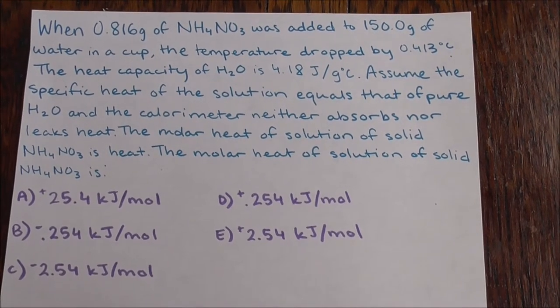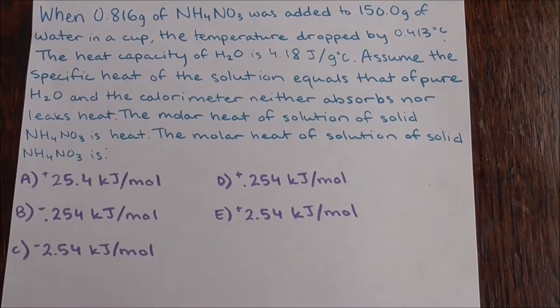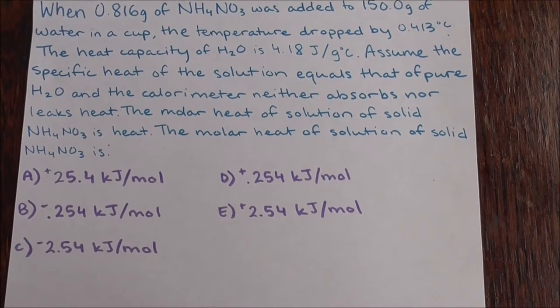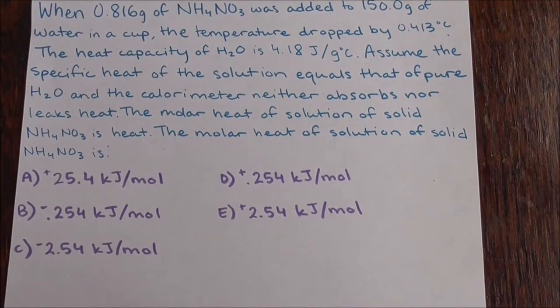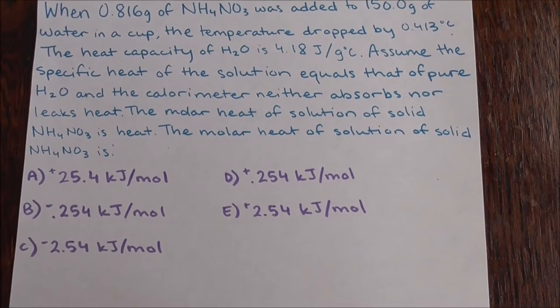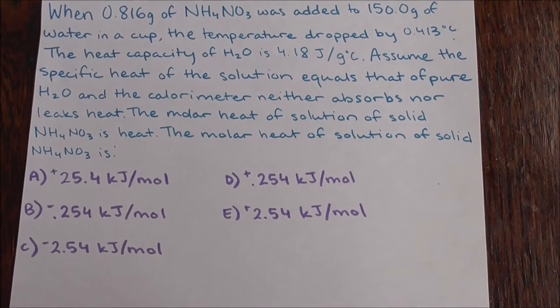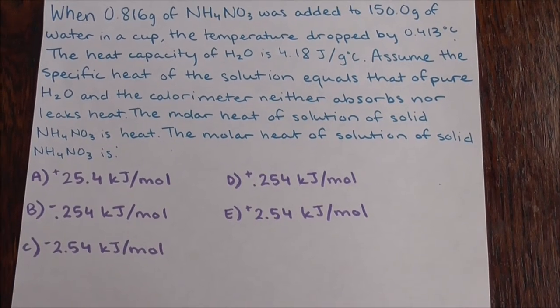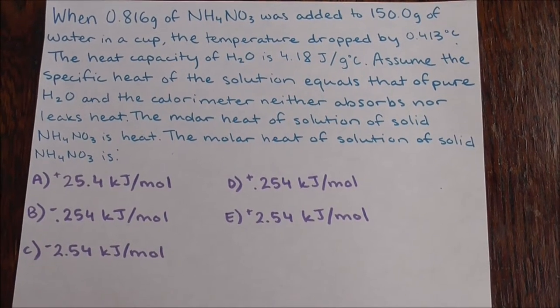The molar heat of the solution of solid NH4NO3 is A, 25.4 kilojoules per mole. B, negative 0.254 kilojoules per mole. C, negative 2.54 kilojoules per mole. D, 0.254 kilojoules per mole. Or E, 2.54 kilojoules per mole. First, we use the specific heat formula.